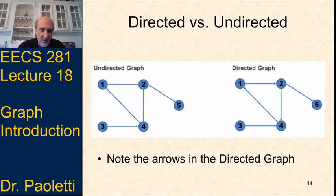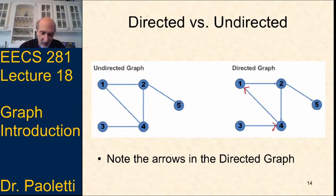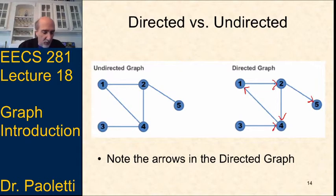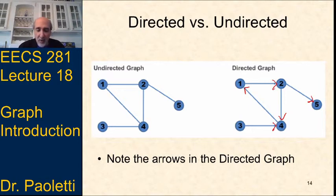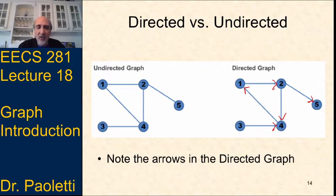Here are two examples of the same edges with and without arrows. In the directed graph, if we start at vertex three we cannot get back to three — once we leave, there's no way back. We can go between vertices one, two, and four in a circle, but if we ever go to vertex five, there's no edge leaving it.